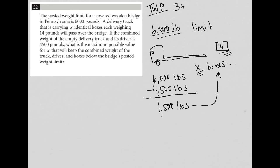Then it says, what is the maximum possible value for X - the number of boxes - that will keep the combined weight of the truck, driver, and boxes below the bridge's posted weight limit? Well, I've already done the math, and I know that I only have 1,500 pounds to work with.